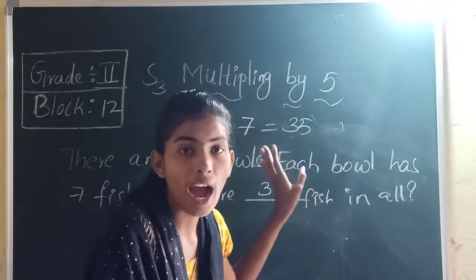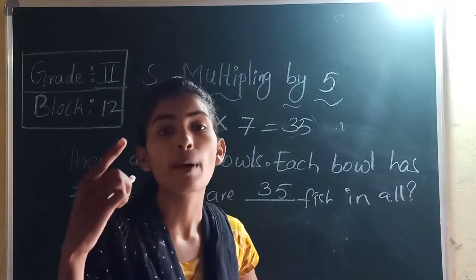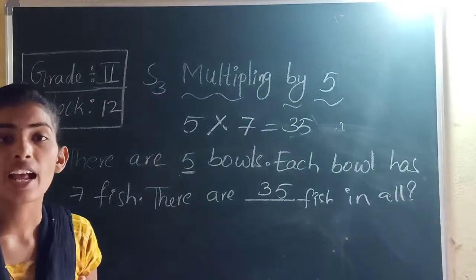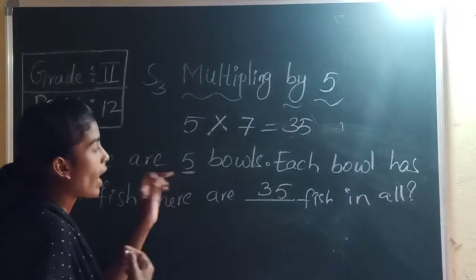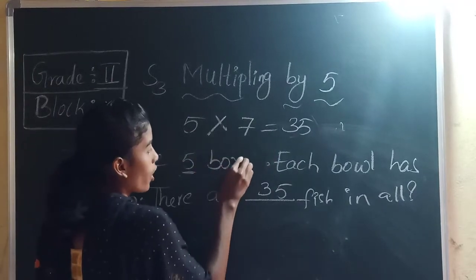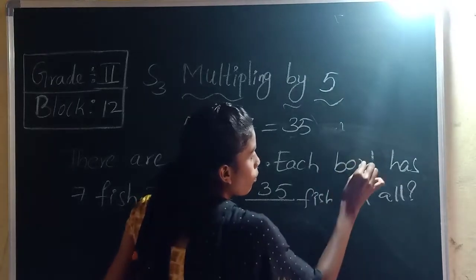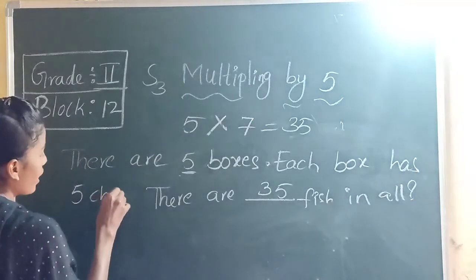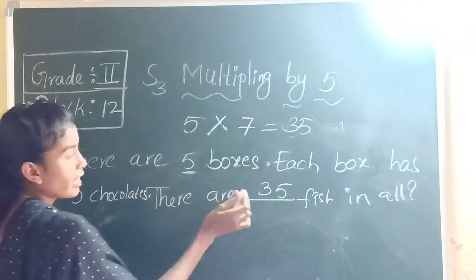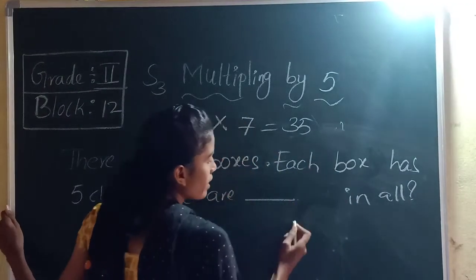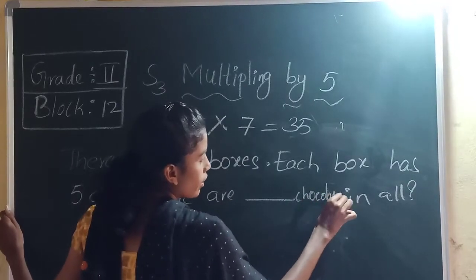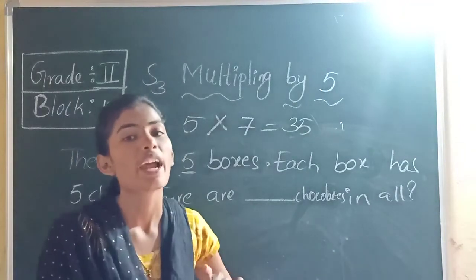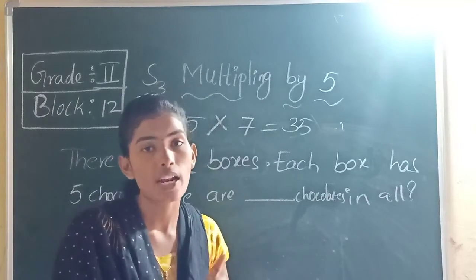Next example: there are 5 boxes, each box has 5 chocolates, how many chocolates are there in all? Write the multiplication sentence first. Boxes represent groups, so 5 into 5. To find the answer, skip count 5 five times. If you write the multiplication sentence, it is easy to find the answer.